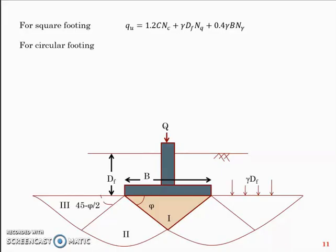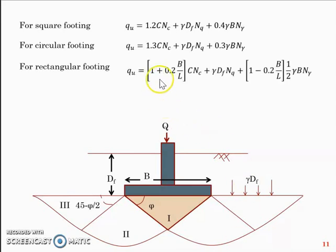If you have a circular footing, the equation would be 1.3 c Nc plus γ Df Nq plus 0.3 γ B Nγ. For a rectangular footing, the general equation is (1 + 0.2 B/L) here and (1 - 0.2 B/L) here. In short, a rectangular footing turns out to be a square footing when you have B equal to L. So this equation gets modified to 1.2 c Nc plus γ Df Nq plus 0.4 γ B Nγ when B is equal to L.